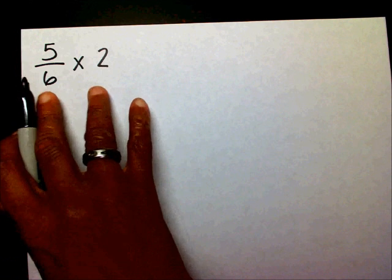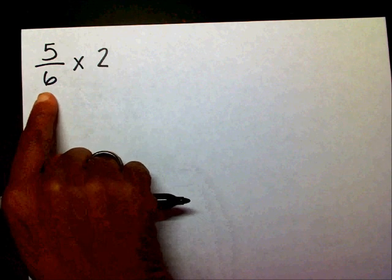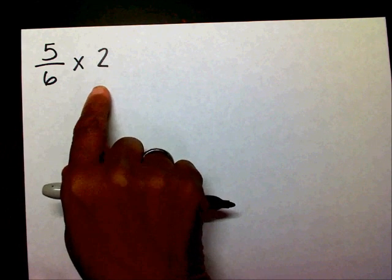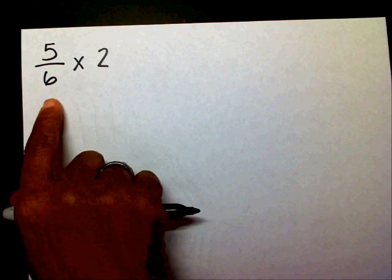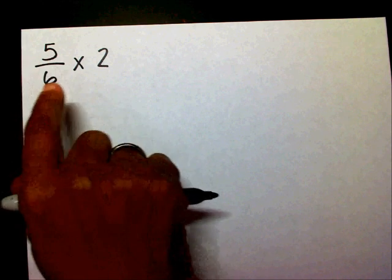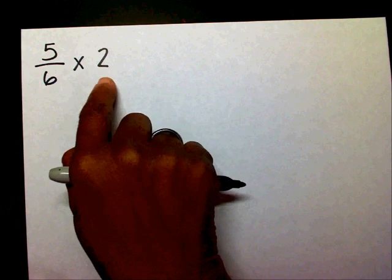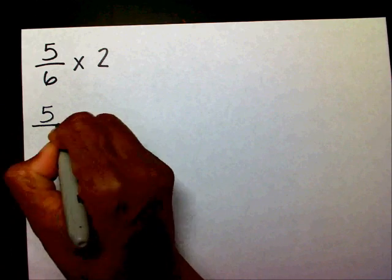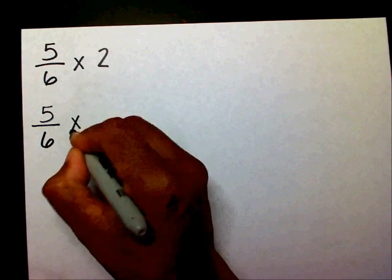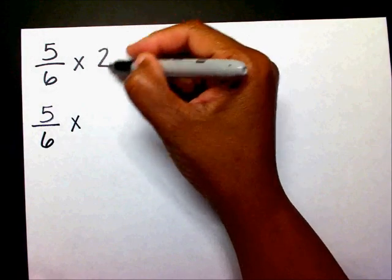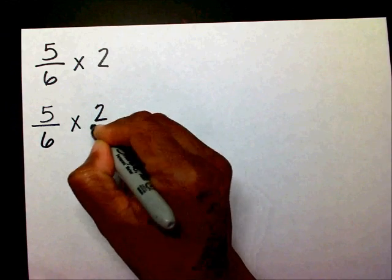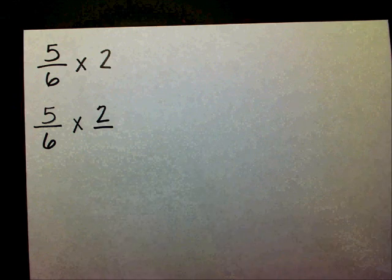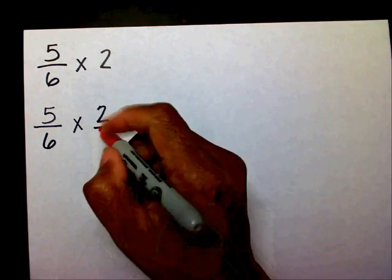The first thing I need to do — I notice that I have a fraction here and a whole number here. So I need to turn my 2 into a fraction. I'm going to write down my 5 sixths times, and in order to turn this 2 into a fraction, I'm going to write the 2 and then put a 1 under it.